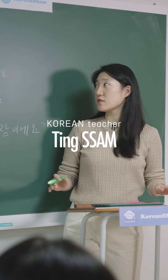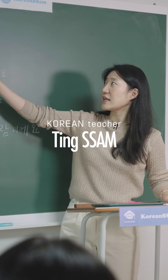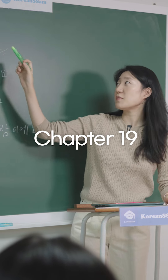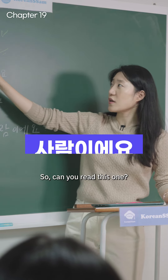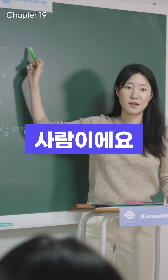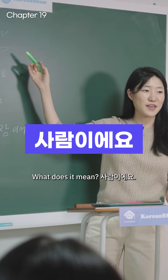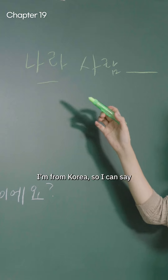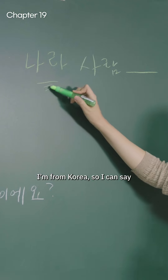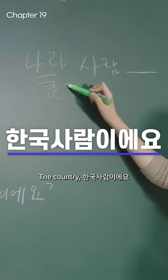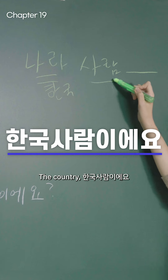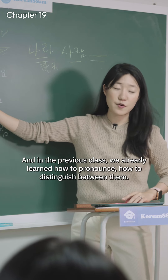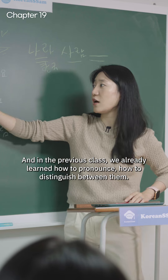For this lesson, we're going to practice more about 이에요 and 예요, especially 이에요. Can you read this one — what does it mean? 사람이에요. Yes, 사람 means person or people. So I can say the country: 한국 사람이에요 — I'm Korean. Very good.